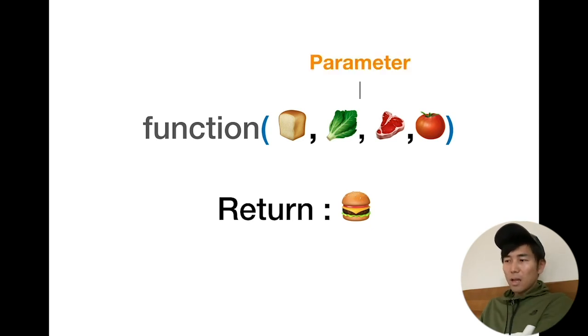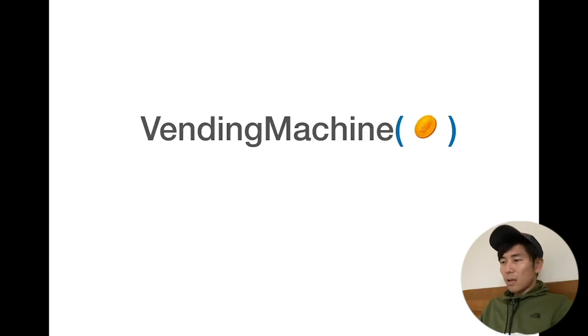Let's take an example of a vending machine. Vending machine, you can put a coin in it and it will return you a soda. Functions are the same thing. You give something and return something, and think of that parenthesis like a slot where you put your coin in.